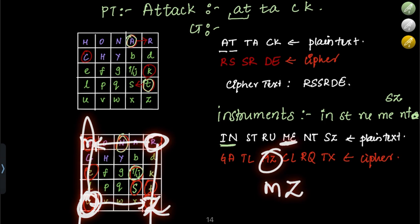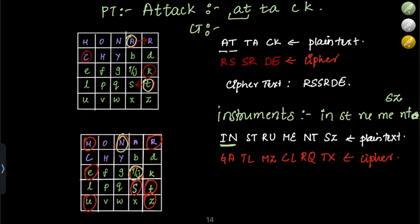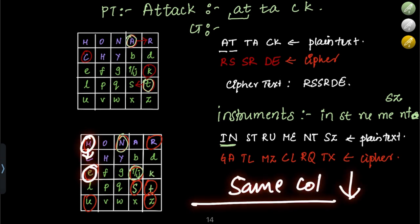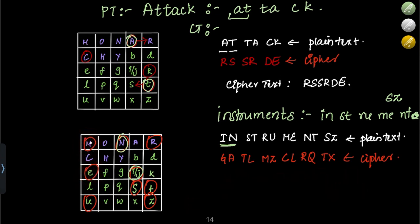For the pair M and E: M is here, E is here — they are in the same column. For same-column letters, take the letter below. The letter below M is C, and the letter below E is L. So ME encrypts to CL.